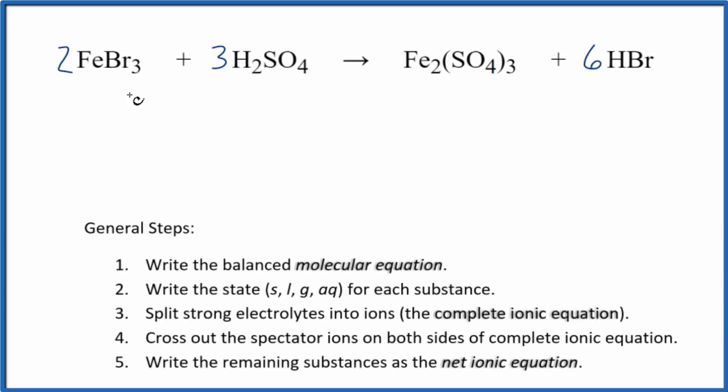In this video, we'll write the balanced net ionic equation for FeBr3 plus H2SO4. This is iron 3 bromide plus sulfuric acid.